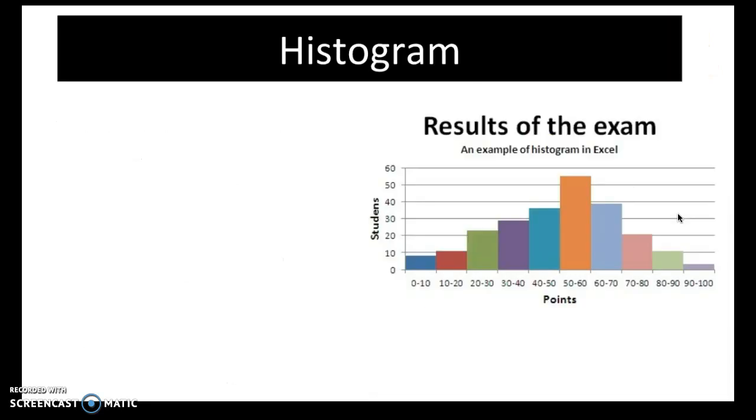The last type of bar graph is a histogram. Sorry, the last type of representation is a histogram. I want to be clear, this is not a bar graph, although it looks like a bar graph. One quick way to tell that it's not a bar graph is that there are no spaces between the bars.